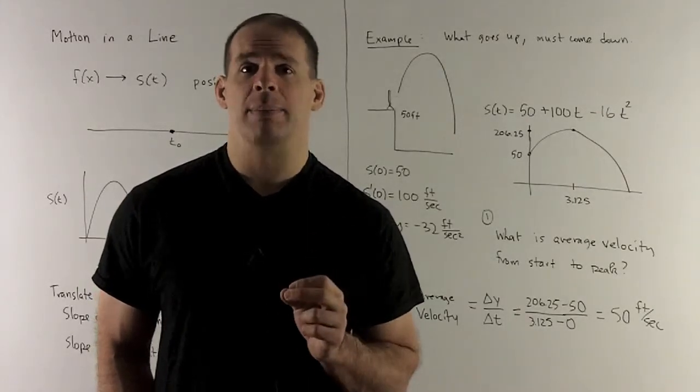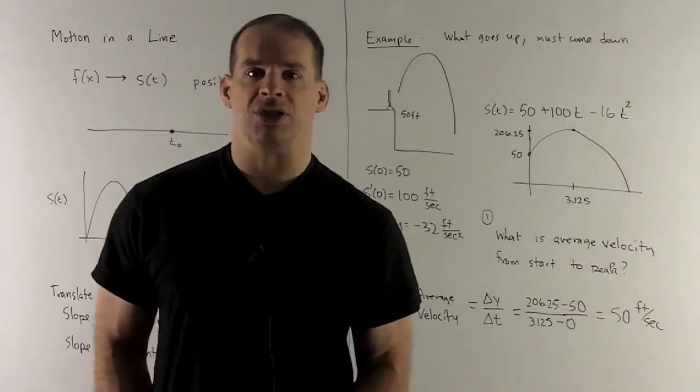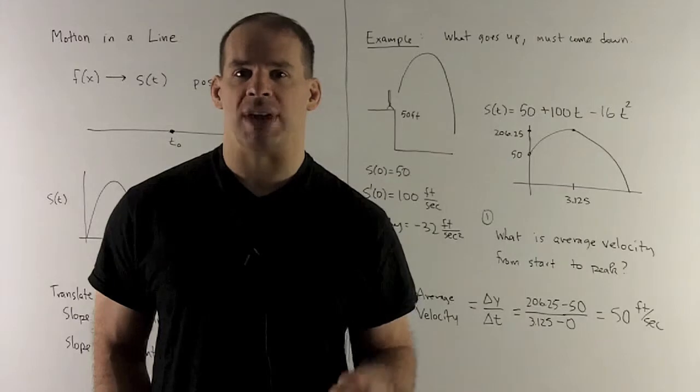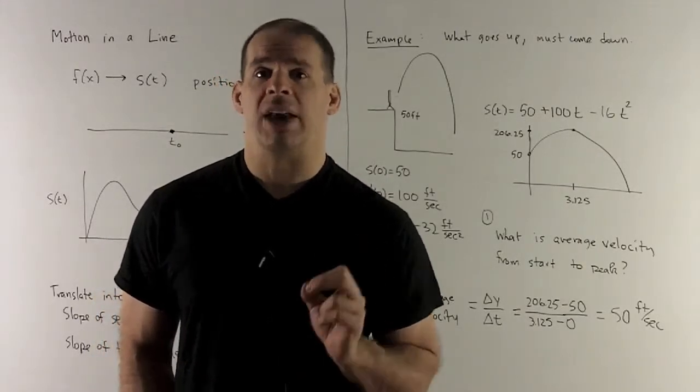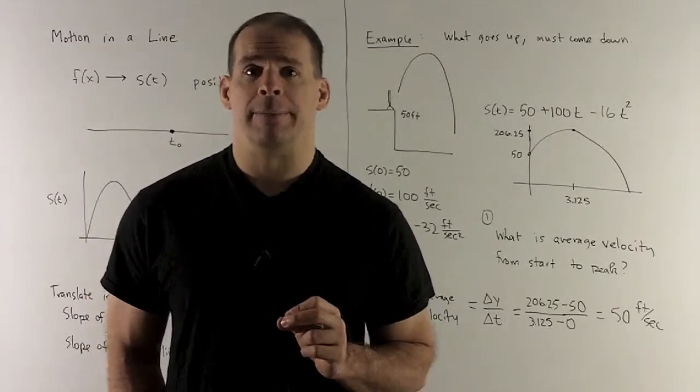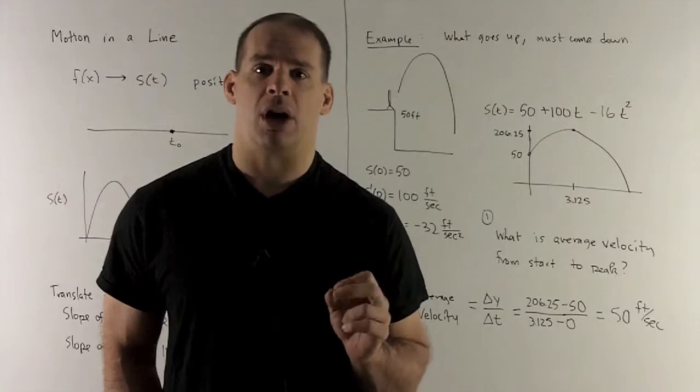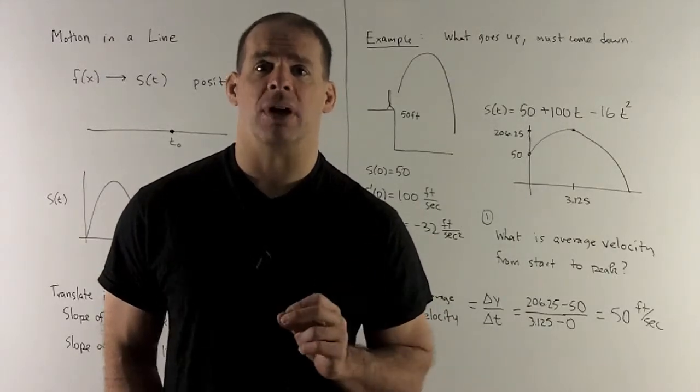So gravity has a minus sign because what gravity does, if you're going up, gravity is working against you. It pulls you back down. So it's actually aimed in the negative direction. We'll see later how to get the equation for this. The equation is going to be s(t) equal to 50 plus 100t minus 16t squared. So that's your position function.